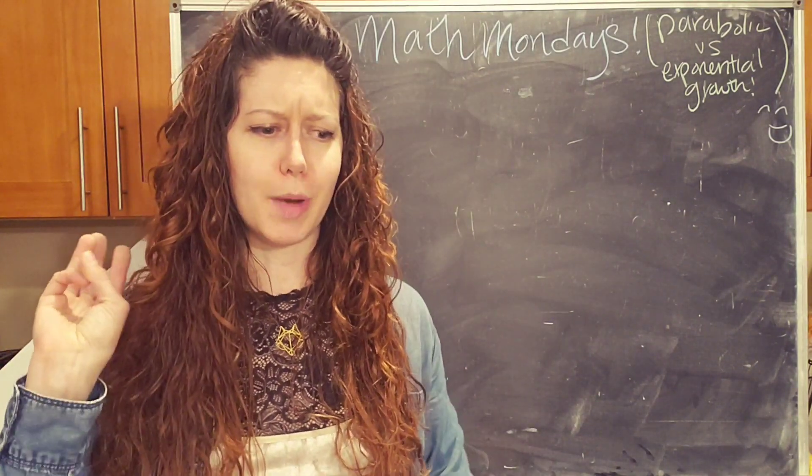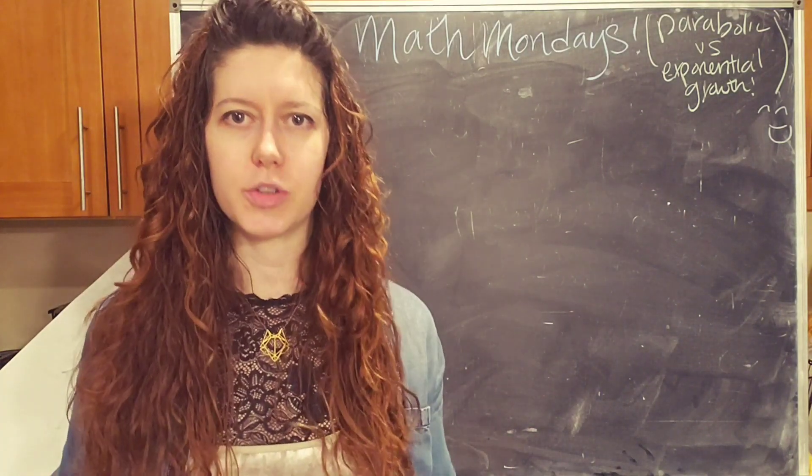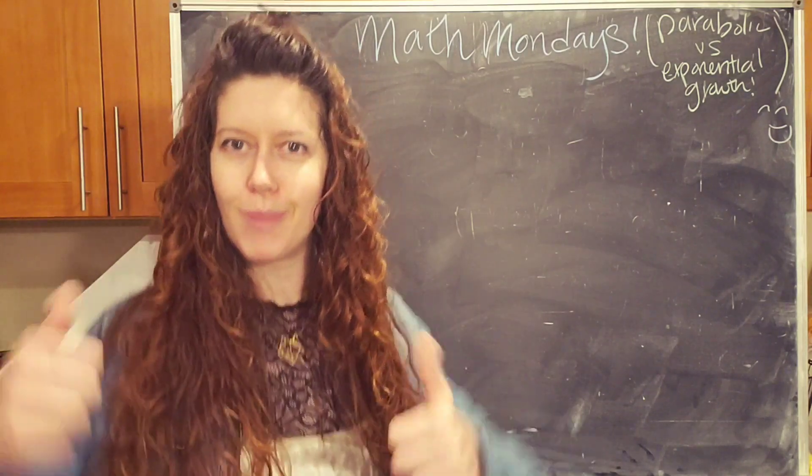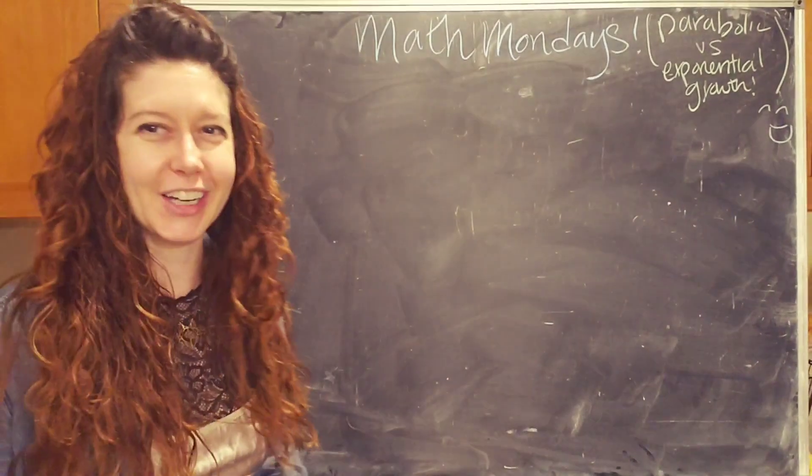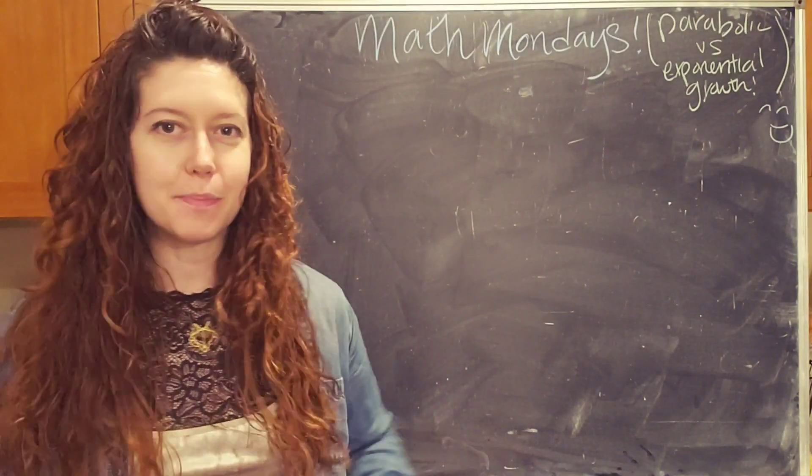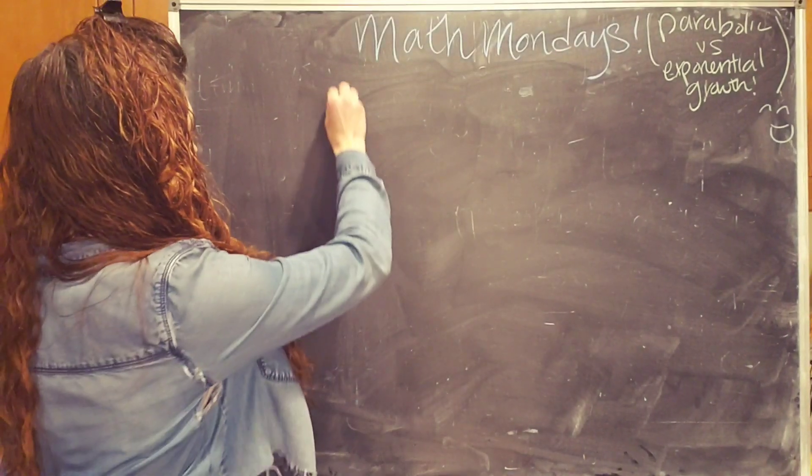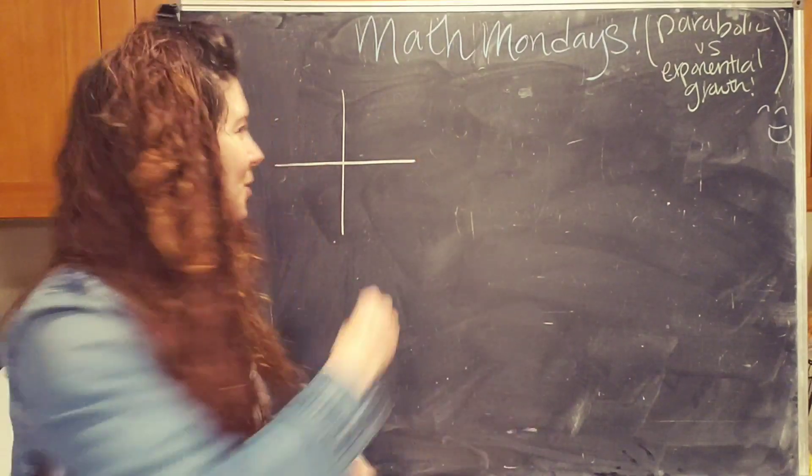So that brings me to my point three. Exponential growth can be hard for us to wrap our heads around. So by comparing it to something more familiar, it makes it easier to understand. Cool. Let's get started. So first of all, I find my piece of chalk and let's draw some pictures to help us better understand what these things look like. So parabolic growth, I'm going to start with that one, looks like a smile.